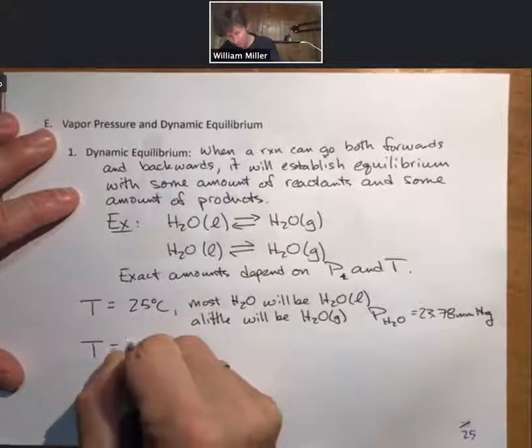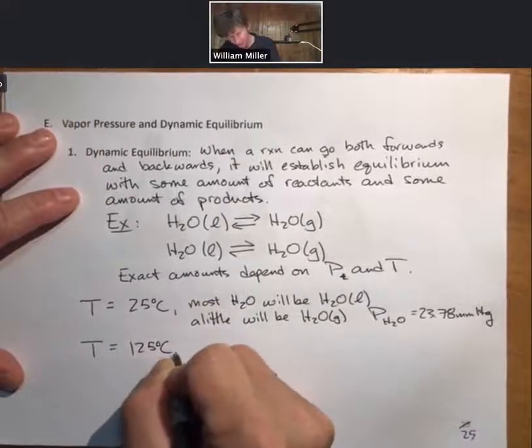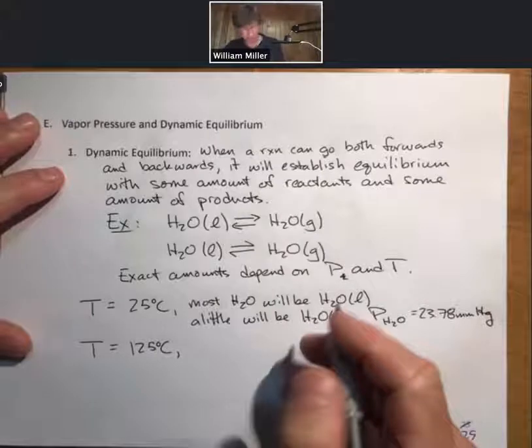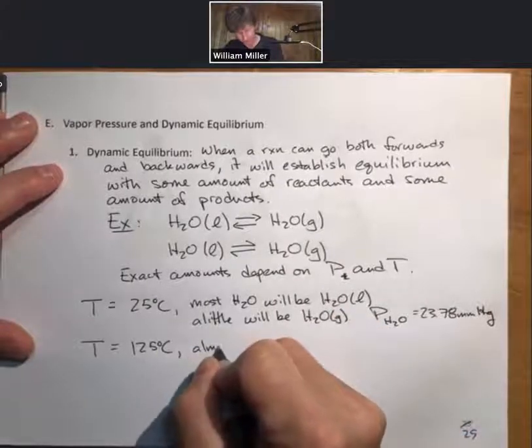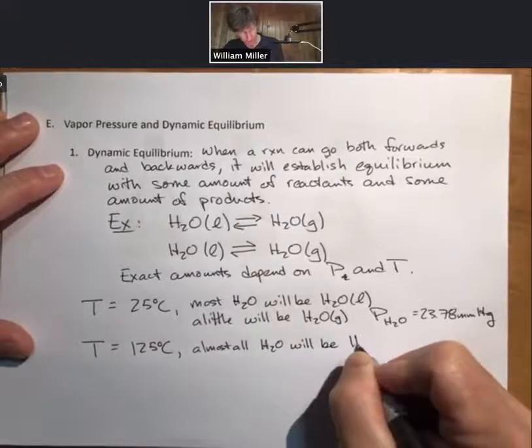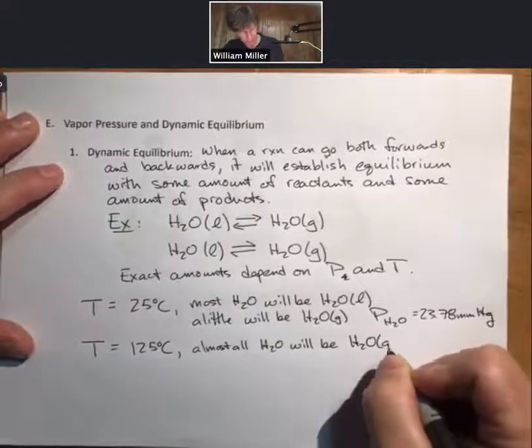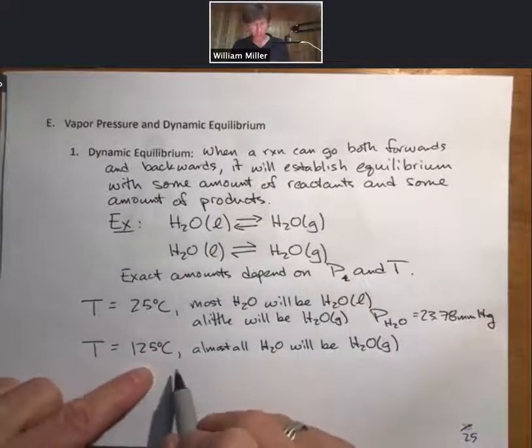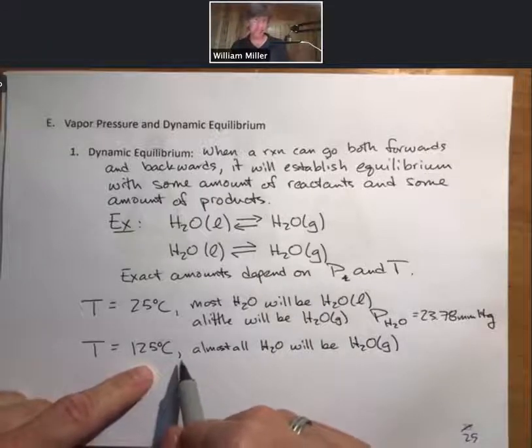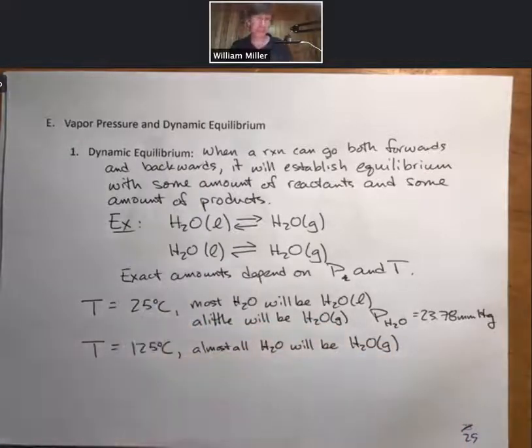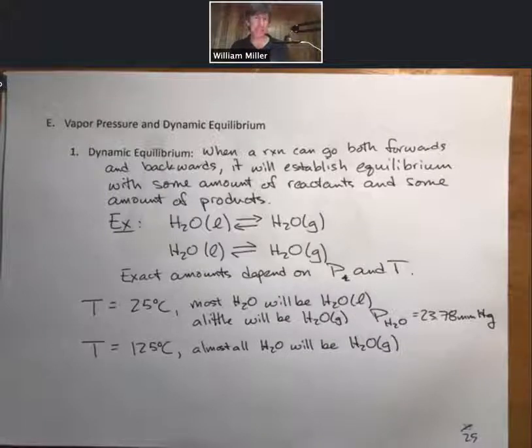But most of it will be water. If we go to T equals 125 degrees Celsius, that's above the boiling point, so most of the H2O, if not all of it, almost all will be H2O gas. This is one illustration that temperature matters. If we take water vapor at 125 degrees Celsius and then cool it down, we can make H2O liquid. That's evidence that this reaction can go both ways, and this is the first time we've seen this in this class.